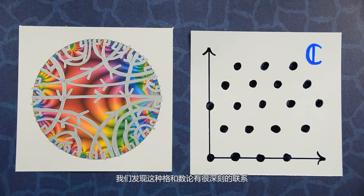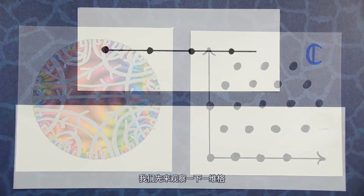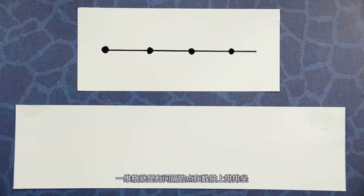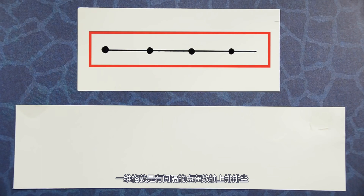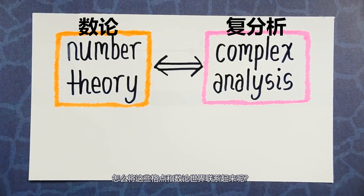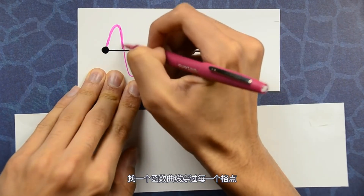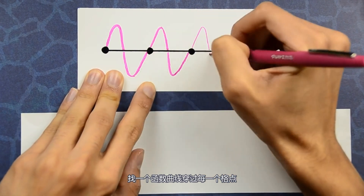This lattice has a very deep connection to number theory. To see it, it might be helpful to look at one dimension lower. Suppose that you have a one-dimensional lattice — just a bunch of evenly spaced dots on the number line. How do you relate this lattice to something that lives in the world of number theory? Well, you can take a function that repeats in every portion of this lattice.